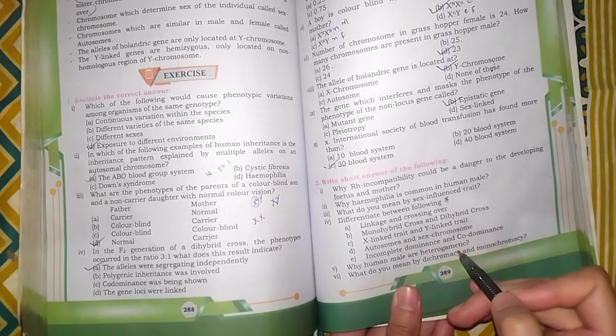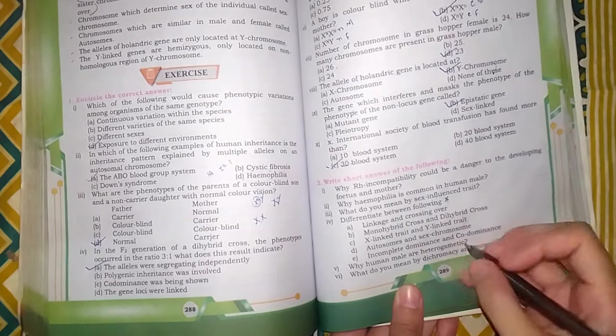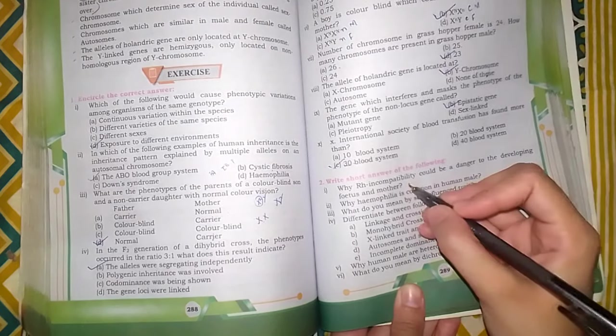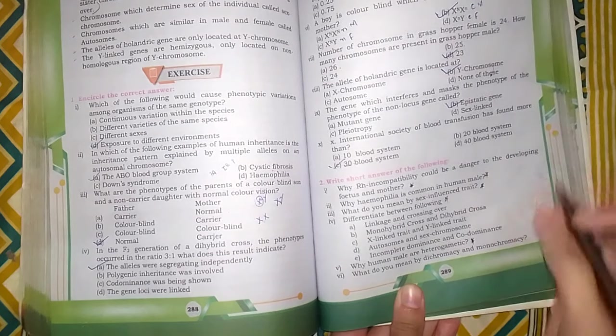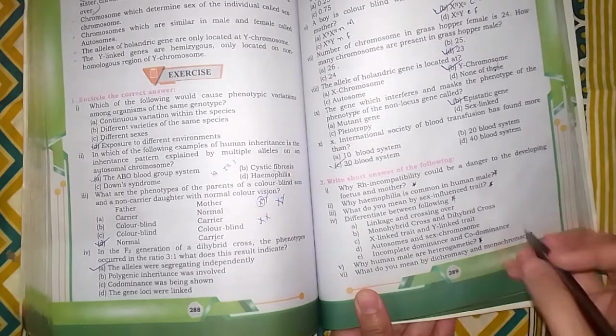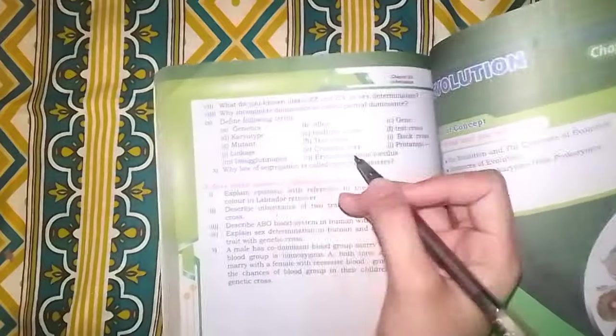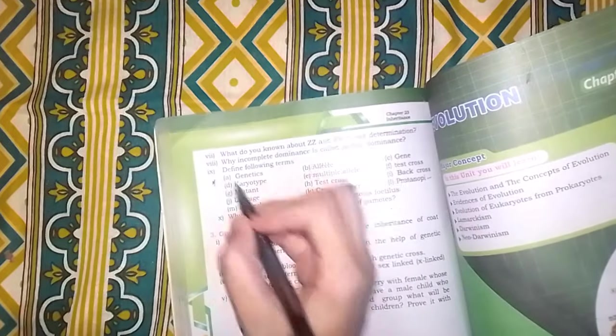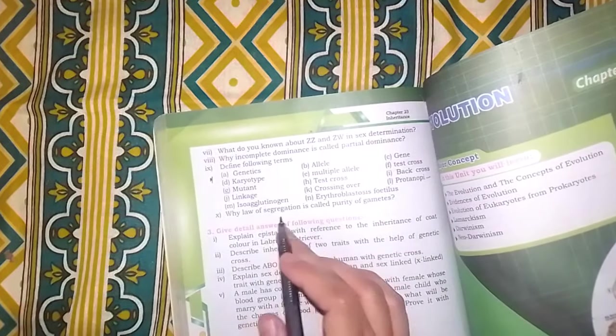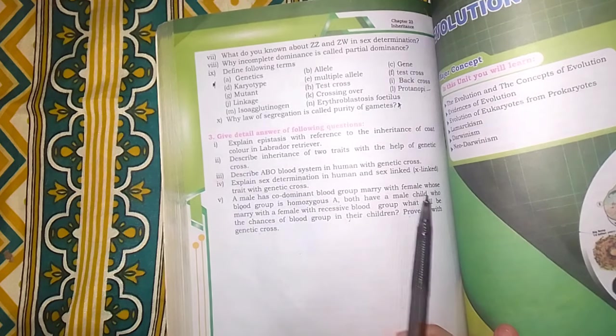Why is human male called heterogametic? Remember that this is also a reason. What do you mean by dichromacy and monochromacy? This is also a definition so you have to do it. Define the following terms - definition questions you have to do in any way.